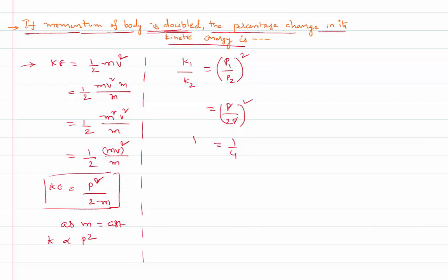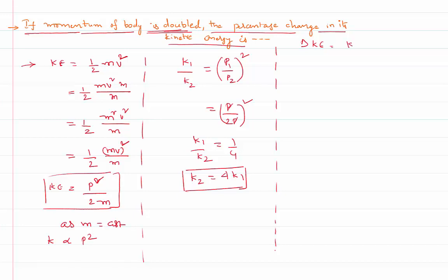Substituting p1 = p and p2 = 2p: k1 by k2 equals p by 2p whole squared. The p terms cancel, giving 1 by 2 squared, which equals 1 by 4. So k1 by k2 is 1 by 4, which implies by cross multiplying that k2 equals 4k1. The final kinetic energy is 4 times the initial kinetic energy.